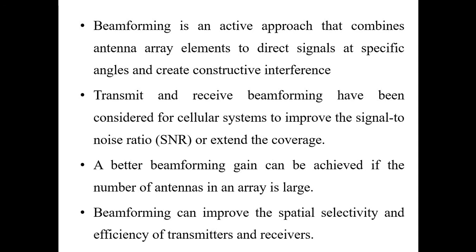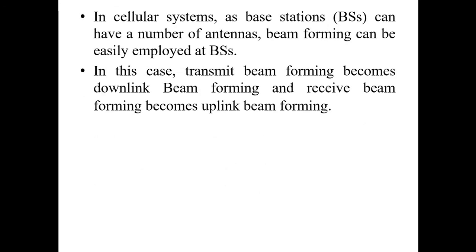Beamforming is an active approach where it combines antenna array elements to direct the signal at specific angles and create constructive interference. With beamforming, we can consistently point more data with high energy in order to improve the signal-to-noise ratio, improving the spatial selectivity and efficiency of transmitters and receivers. In a cellular system, base stations can have a number of antennas and beamforming can be easily employed there, because two channels play a role in transferring data from the base station to the mobile and back. Transmit beamforming helps make the downlink beamforming, while receive beamforming becomes uplink beamforming.